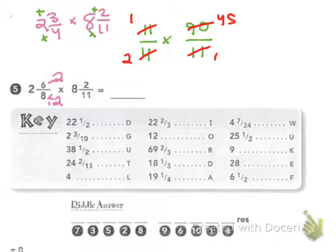So now I'm setting this up as a multiplication problem. 1 times 45 over 2 times 1. That is equal to 45 over 2.